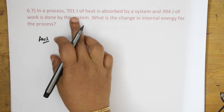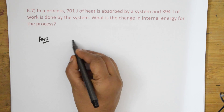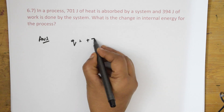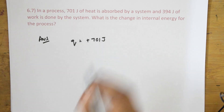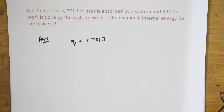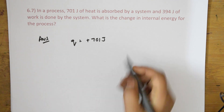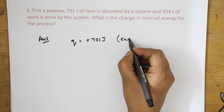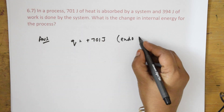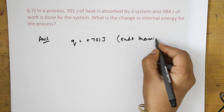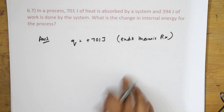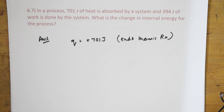The quantity of heat q is given as +701 joules. The positive sign means the heat energy is absorbed — it is an endothermic reaction, because q is positive.